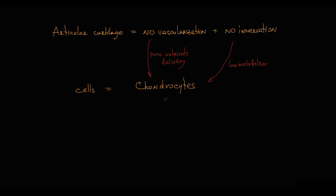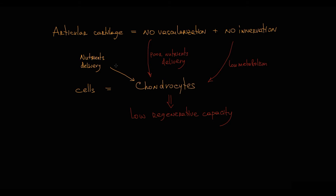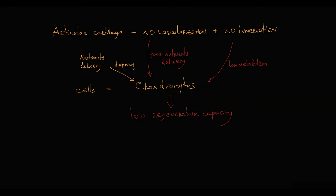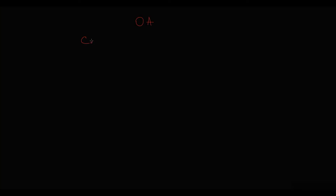This results in very low cartilage regenerative capacity. Nutrient delivery to chondrocytes occurs by diffusion of nutrients from synovial fluid. 'Degenerative' means that osteoarthritis occurs at a point when cartilage degradation prevails over cartilage synthesis, causing cartilage degeneration — essentially loss of cartilage mass.